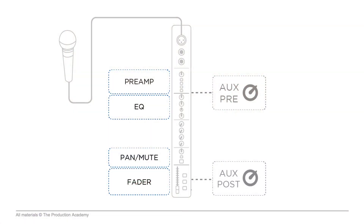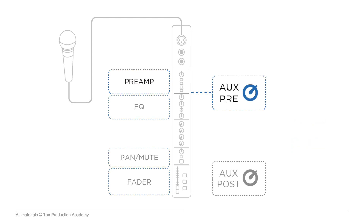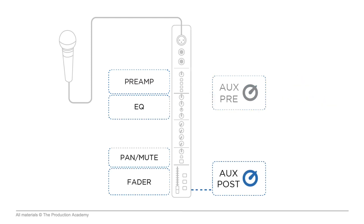As we look at the signal chain, you can see that there are two different places the signal can be split. These are called pickoff points. Aux pre is picked off directly after the preamp section, which means it is pre-EQ and pre-fader. And aux post is picked off at the end of the channel strip, which means it's post-EQ and post-fader.